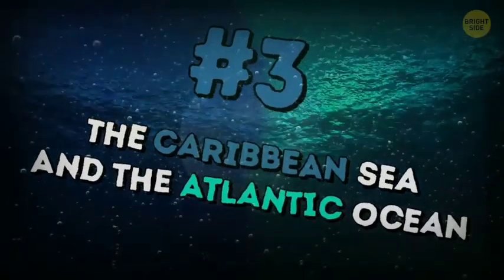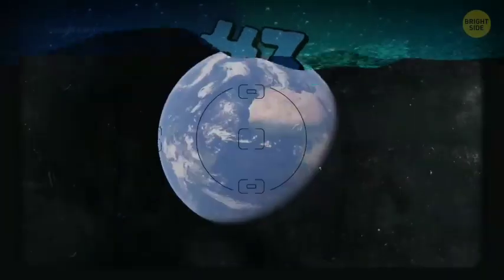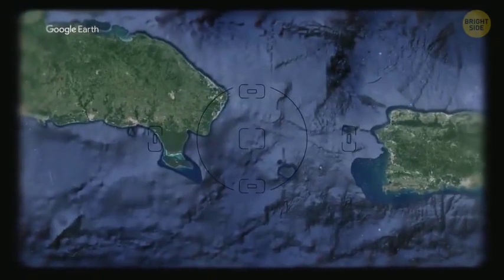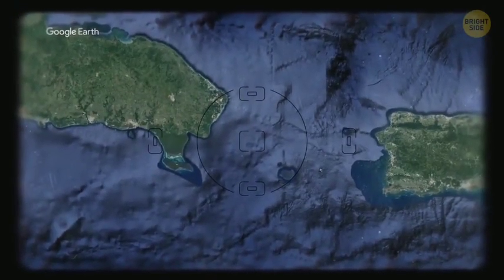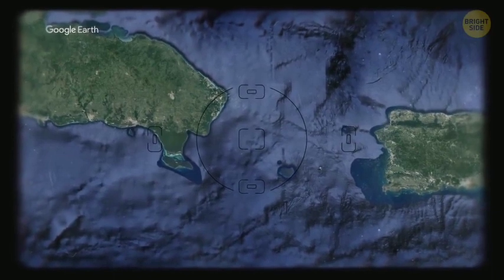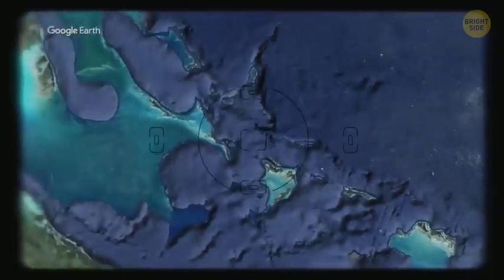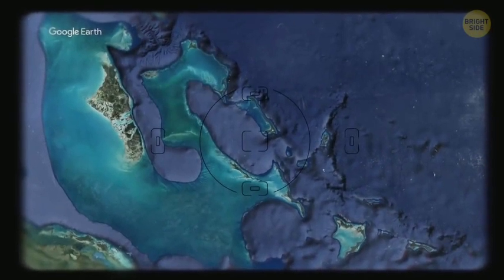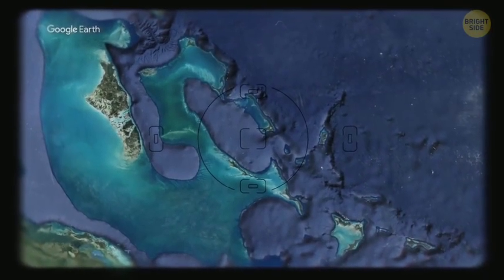The Caribbean Sea and the Atlantic Ocean. The place where they meet is near the Antilles and looks like someone has painted water with different shades of blue. Another place where these two meet is the Eleuthera Island of the Bahamas. The Caribbean seawater is turquoise, and the Atlantic Ocean water is dark blue.